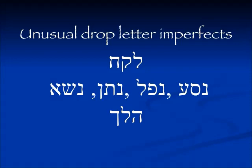There are a few verbs which are irregular — we wouldn't expect them to be drop-letter imperfects, but they are. Two very common ones: Lakach, 'to take' — the imperfect tense is Ekach, Tikach, Tikchi — no Lamed. The other unexpected one is Halach, 'to walk' — there are other verbs beginning with He that keep the He in the future, but not for walking. The future tense for walk is Elech, Telech, Telchi, Yelech, and so on. Verbs beginning with Nun are a mixed bag — the older ones tend to be drop-letter, but newer verbs keep the Nun in the conjugation.